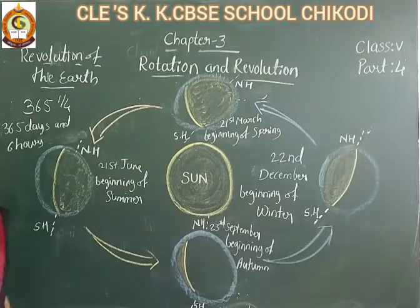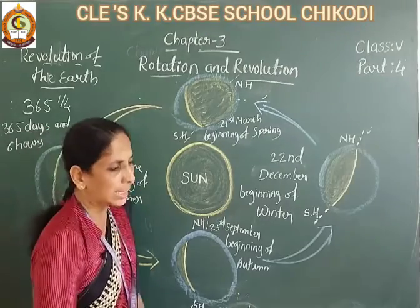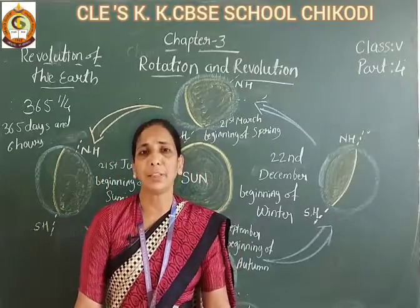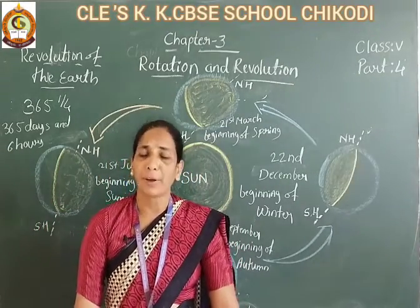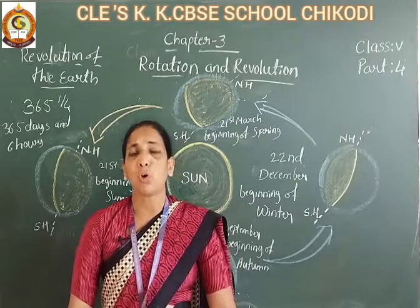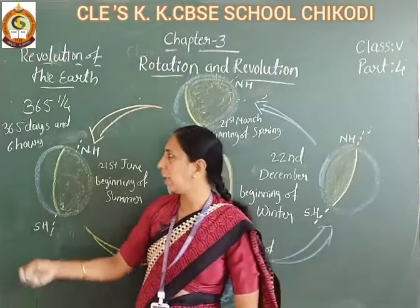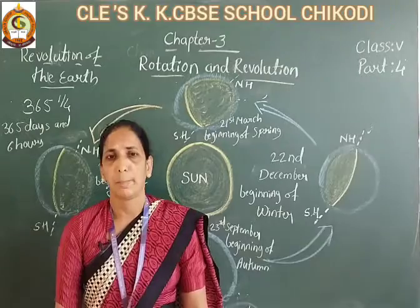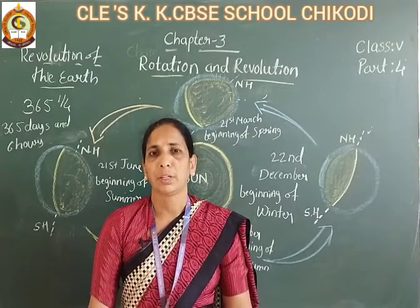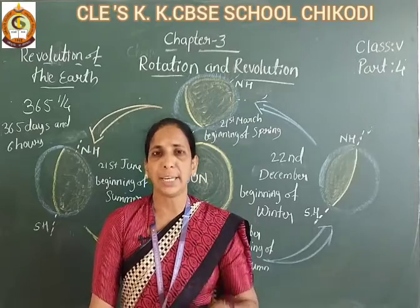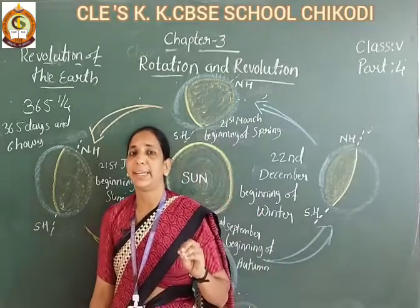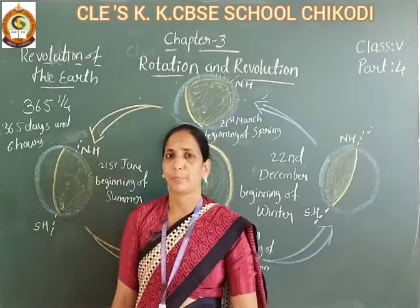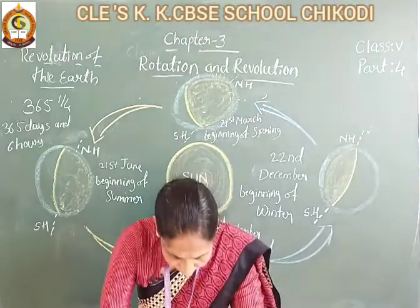These extra 6 hours are accumulated, and those extra days are added in the month of February. So after every 4 years, we see 366 days in a year. In that year, the month of February has 29 days. So this is called a leap year.